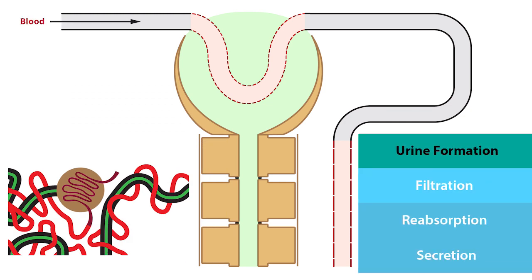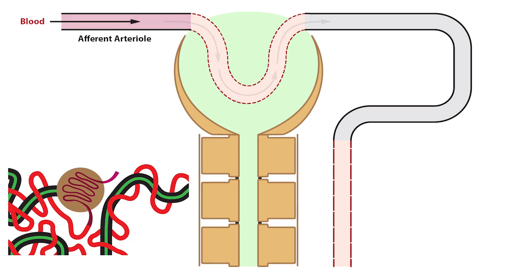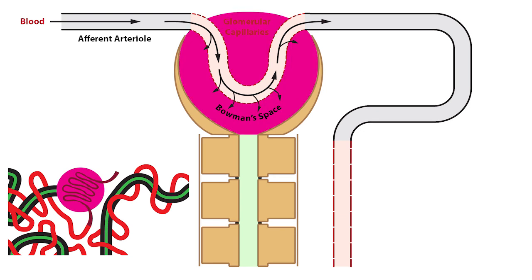Filtration is the first step in the formation of urine, and it begins as plasma exits the afferent arteriole and enters the glomerular capillaries. Once inside the glomerular capillaries, hydrostatic pressure promotes the movement of water, electrolytes, solutes, and waste products across the glomerular capillaries into the Bowman space of the glomerulus, at which point this fluid is referred to as the filtrate or ultrafiltrate.